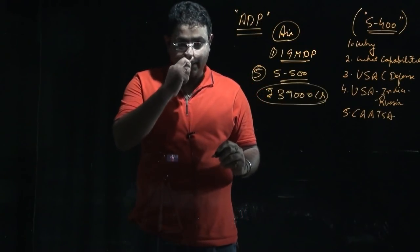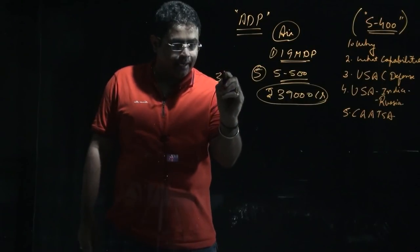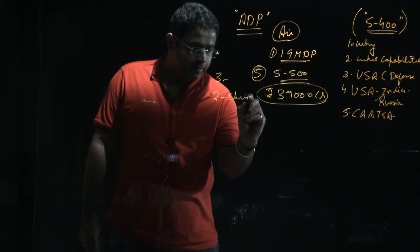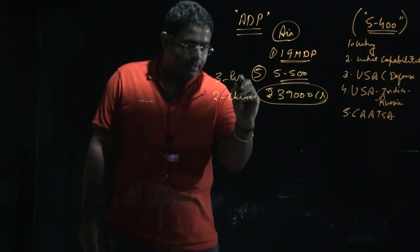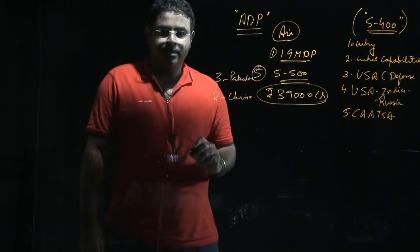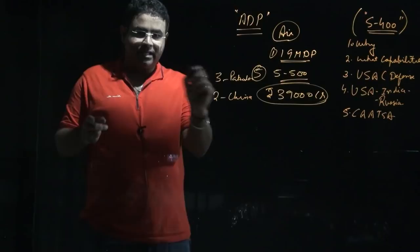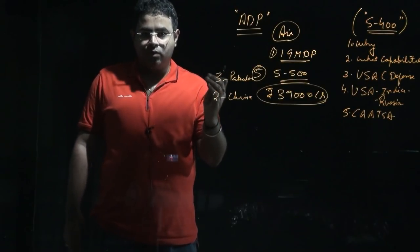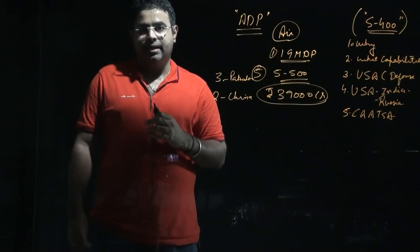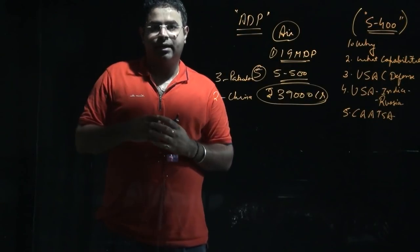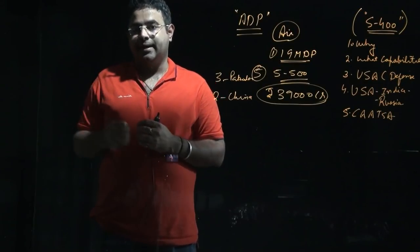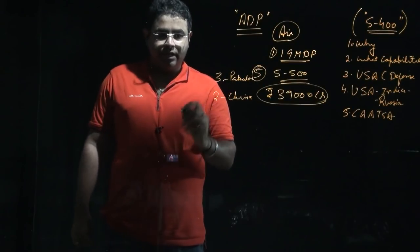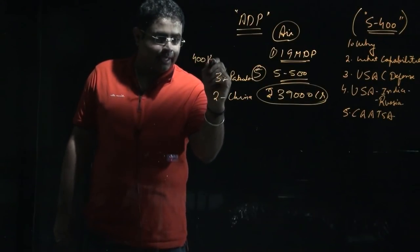We will acquire five S-400 systems. Three will be deployed against Pakistan, two against China. Any missile coming from Pakistan within 400 km towards India, this system will detect it, launch a counter-missile, and stop any missile attack against India.